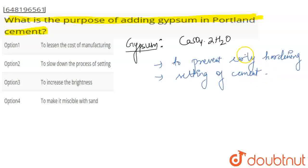So that your cement is adequately hardened. The setting of cement will slow down. It is used to slow down the process of setting. Option 2 is going to be correct. Thank you.